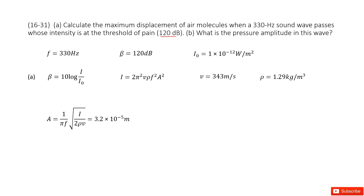The unit dB means this is the sound level, beta. Beta is 120 dB. We also know the background reference intensity from our textbook. We need to find the amplitude. So how can we find the amplitude? We can consider the function connecting intensity and amplitude.